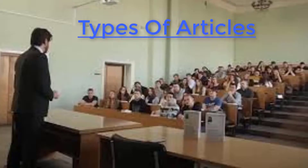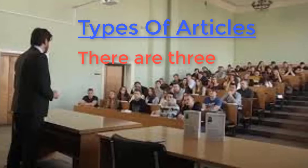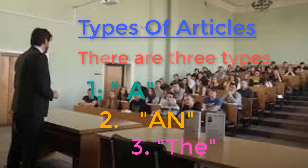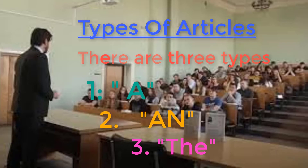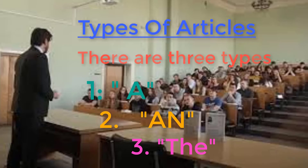Then come the types of articles. There are three types of articles, and these are: a, an, and the. Let me explain these three kinds of articles separately.